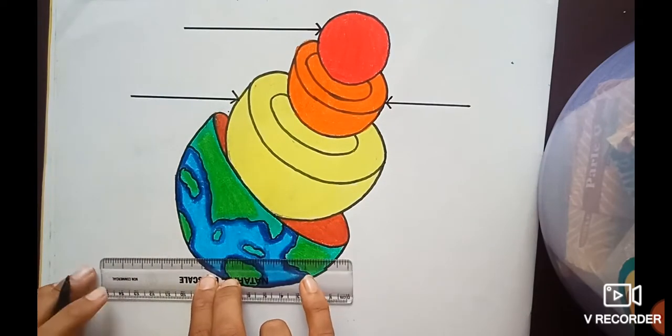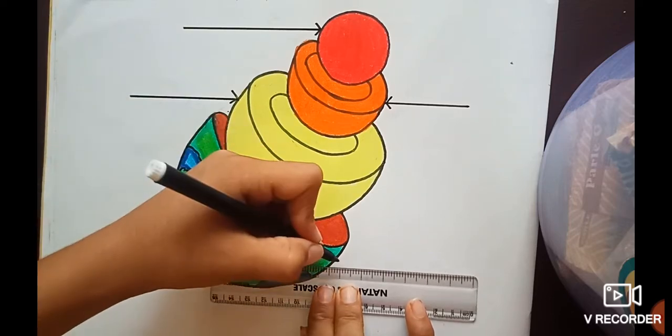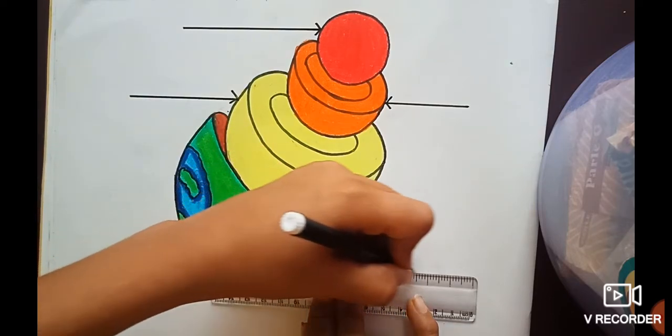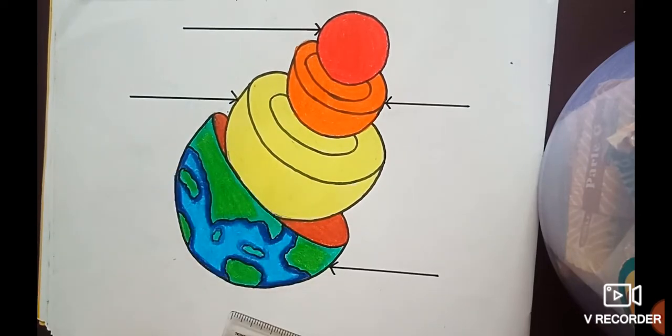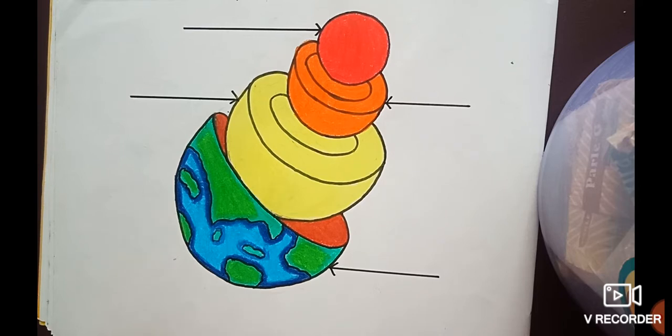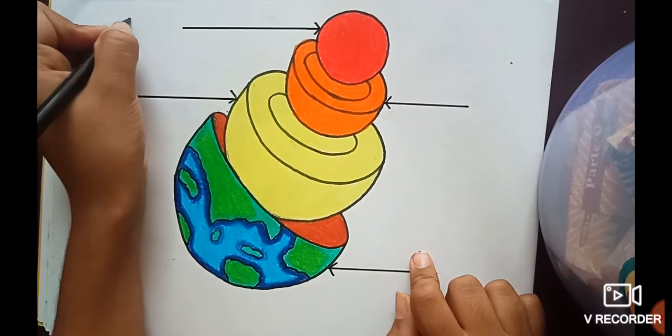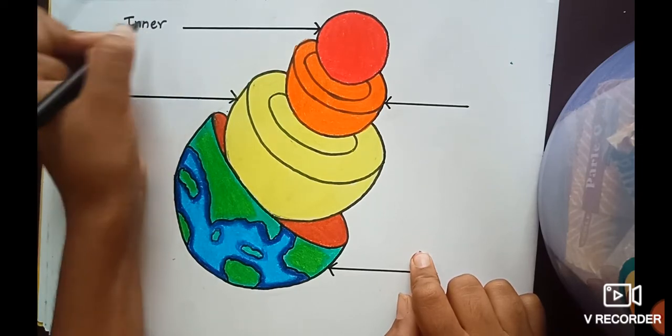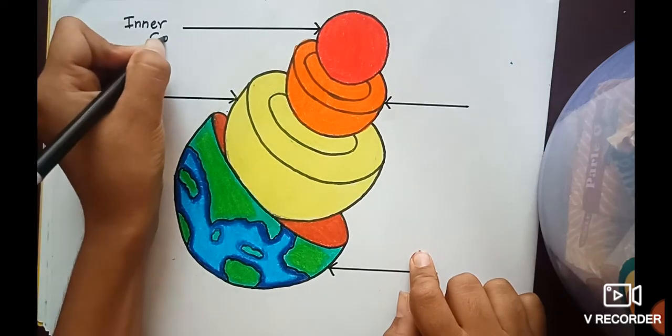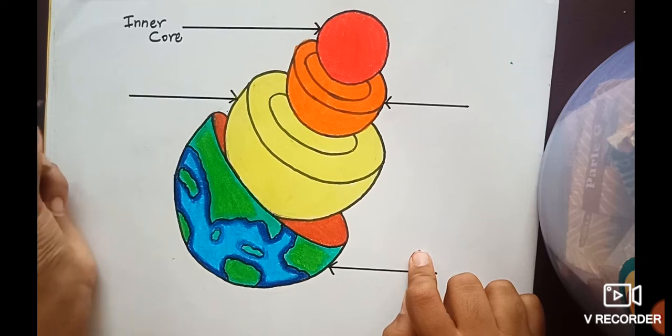This is our last layer of crust. And draw the arrows like this, and then name it. So first arrow should be named as inner core. The spelling is right over there: I-N-N-E-R C-O-R-E.